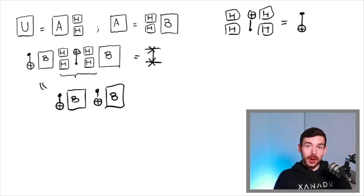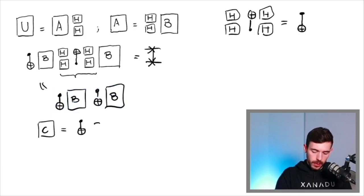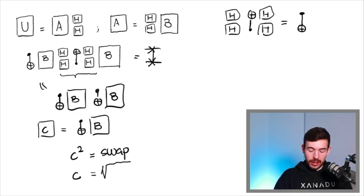So if we pay attention to this expression, we can check that we have two times the same operator. So let's call, for example, C equal to CNOT B. It means that actually C squared is equal to the SWAP gate. So the operator C is going to be the square root of the SWAP gate. This is something that we can look for in the documentation, or actually it's not very difficult to deduce.